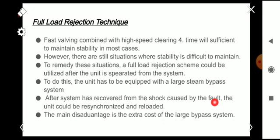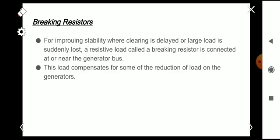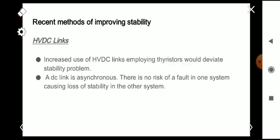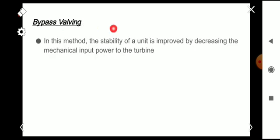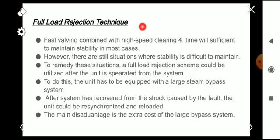The main disadvantage is the extra cost of this large bypass system. These are the four recent methods for improving stability: HVDC links, braking resistors, bypass valving, and full load rejection technique. I hope all of you understand the topic well. Thank you.